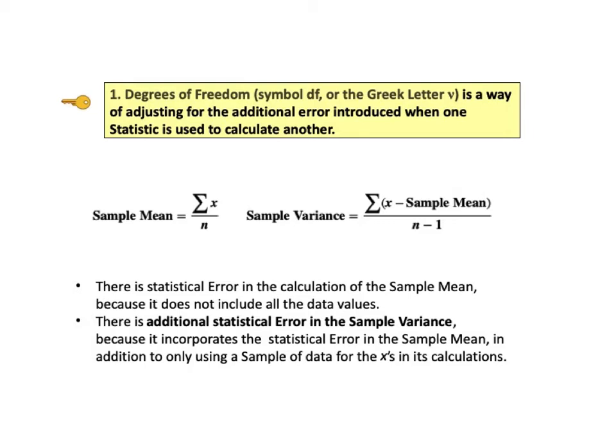And this is what happens in the case of the sample variance. So the sample variance has two sources of error. It is an estimate from sample data, and there is also the estimation error from the sample mean, which goes into the calculation of the variance. The degrees of freedom is intended to adjust for the additional error which is introduced when one statistic is used to calculate another.